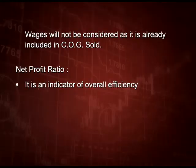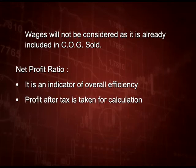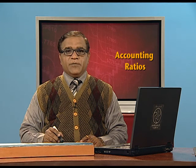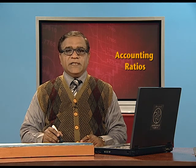The next ratio is net profit ratio, which is an indicator of overall efficiency of the enterprise. We take profit after tax, calculated by deducting all direct and indirect expenses. Net profit ratio is net profit after tax divided by net sales into 100. If net profit after tax is 5,00,000 and sales is 20,00,000, then net profit ratio is 25 percent. Students, today we have completed this chapter on accounting ratios. In the next class we will start with the new chapter — cash flow statements. Goodbye and thank you.